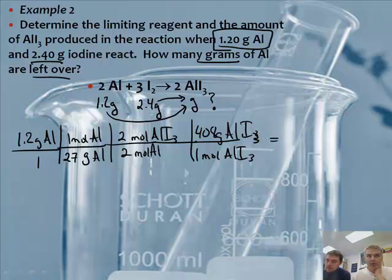So now when you do the math, Mr. Sams, 1.2 divided by 27 times 2 divided by 2 times 408 is what? 18.1. 18.1 grams of AlI3.